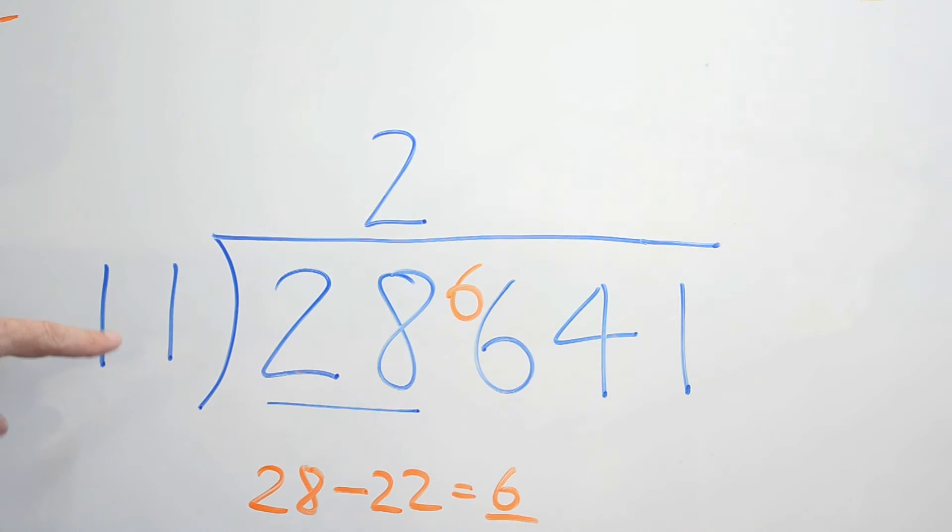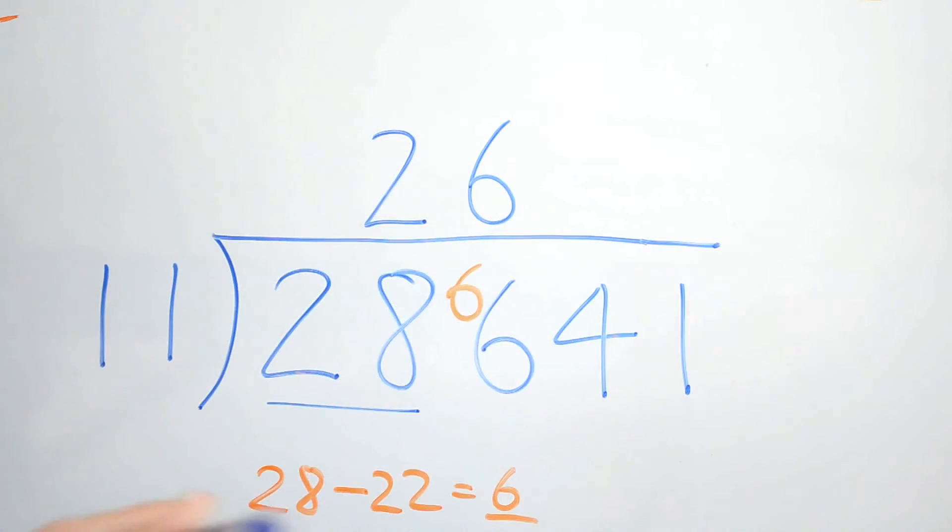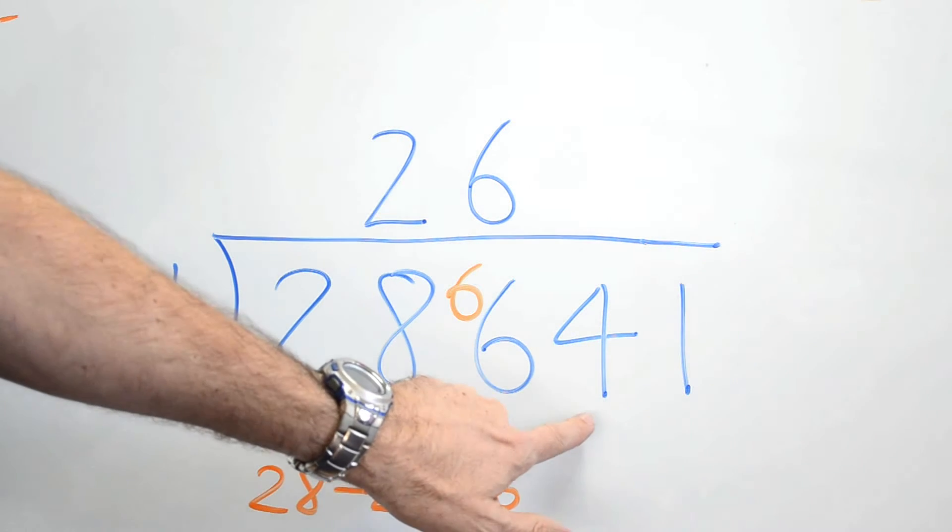Okay. Now this one's pretty easy. We've done this one before too. So 66 divided by 11 is 6. And there's no remainder on this one. Nice and easy.